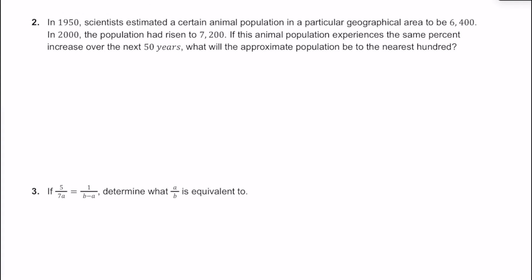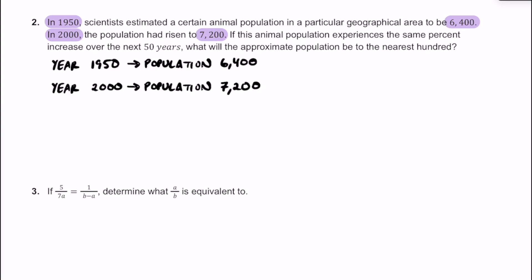Here's number two. In 1950, scientists examined a certain animal population in a particular geographical area to be 6,400. However, in the year 2000, we know the population is now going to be 7,200. The question is, if the animal population experiences the same percent increase over the next 50 years, what is going to be the approximate population to the nearest 100? So 50 years went by from 1950 to 2000, and they're wondering what the population will be in the year 2050.